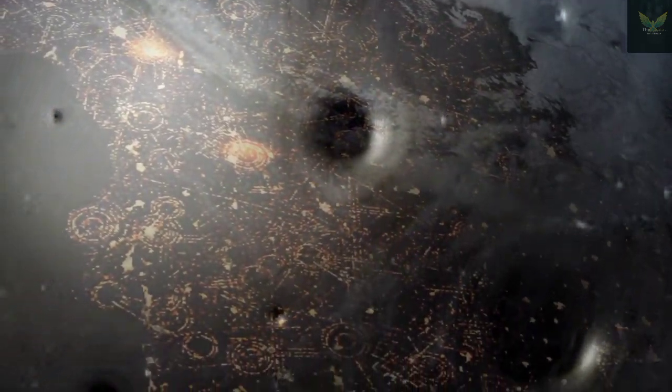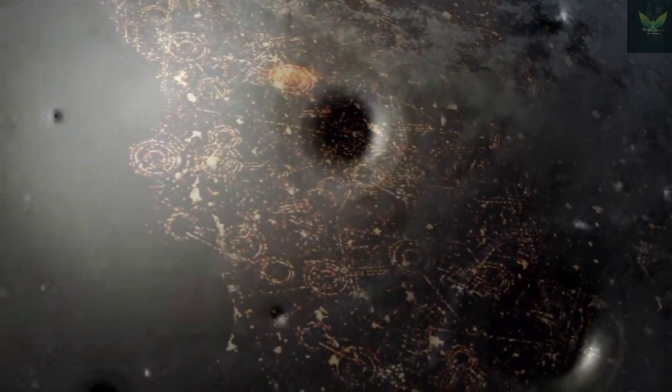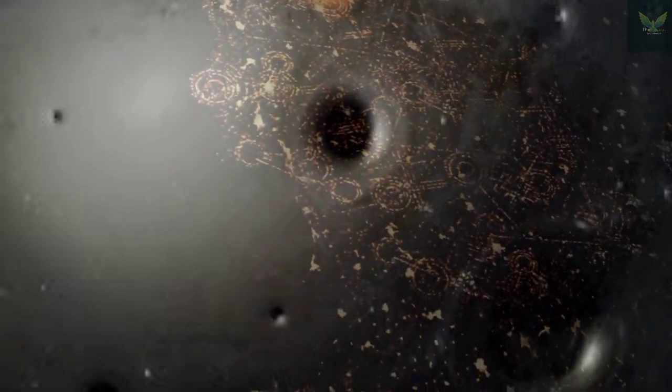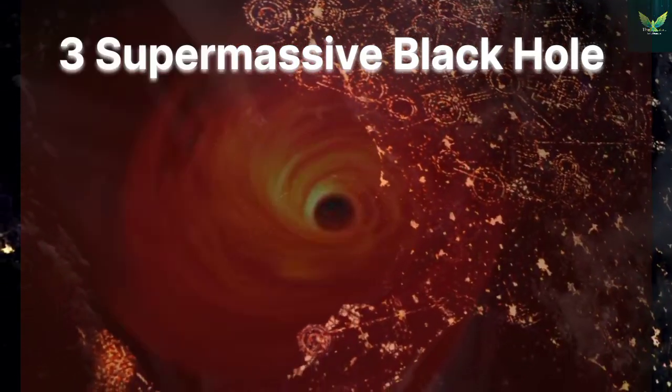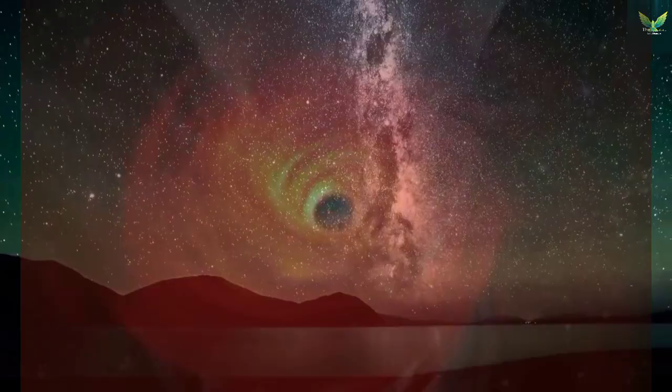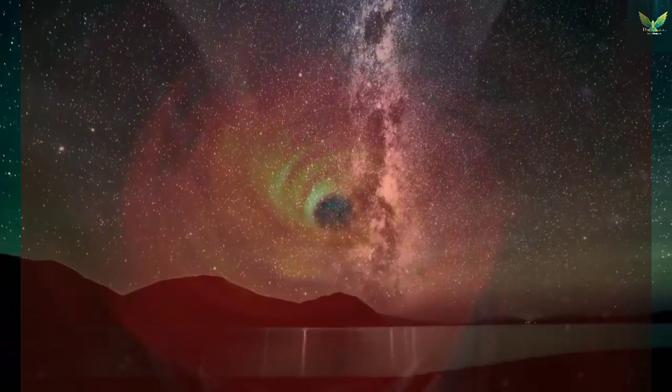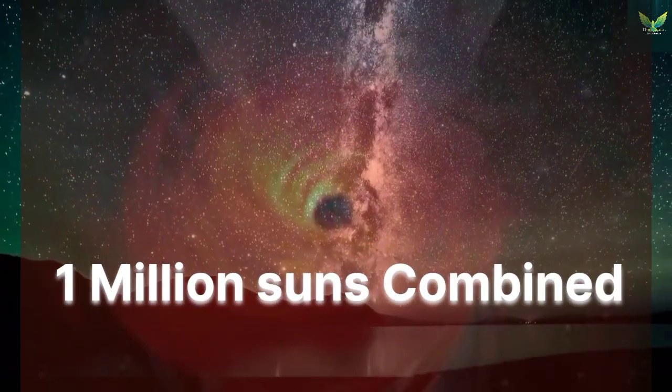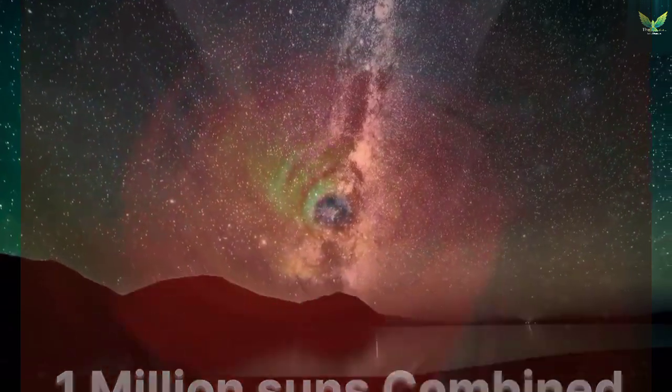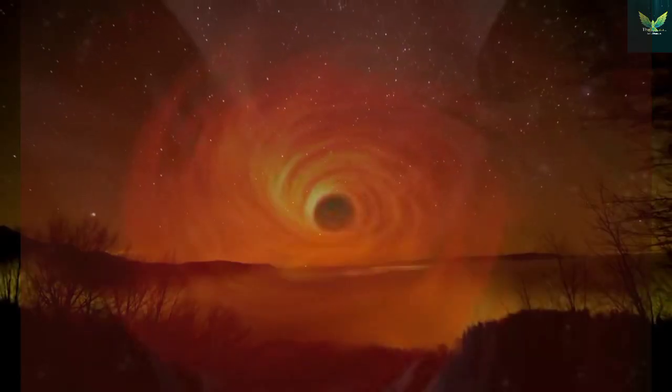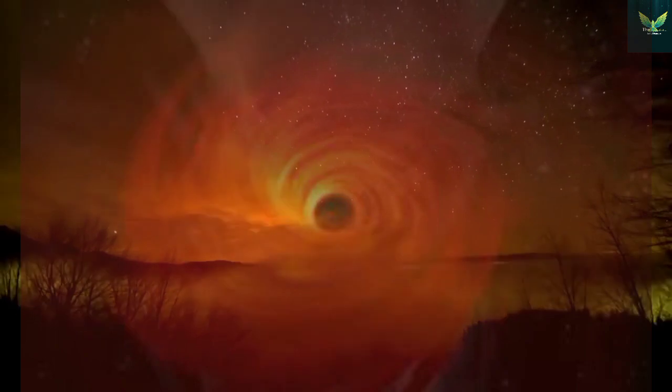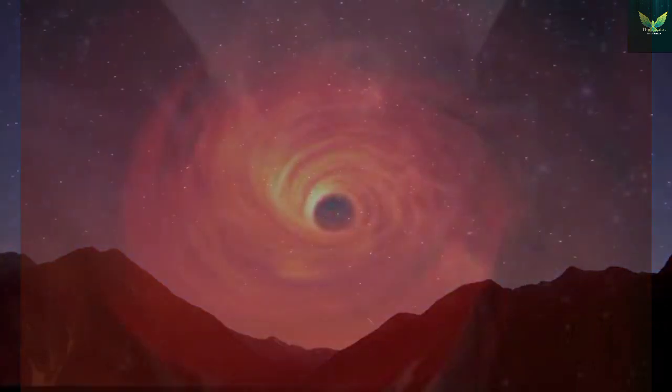The third type of black hole is supermassive black holes. These black holes are enormous, so big that their mass is more than that of one million suns combined. Scientists believe that at the center of every major galaxy there is a supermassive black hole. The supermassive black hole at the center of our Milky Way galaxy is named Sagittarius A.